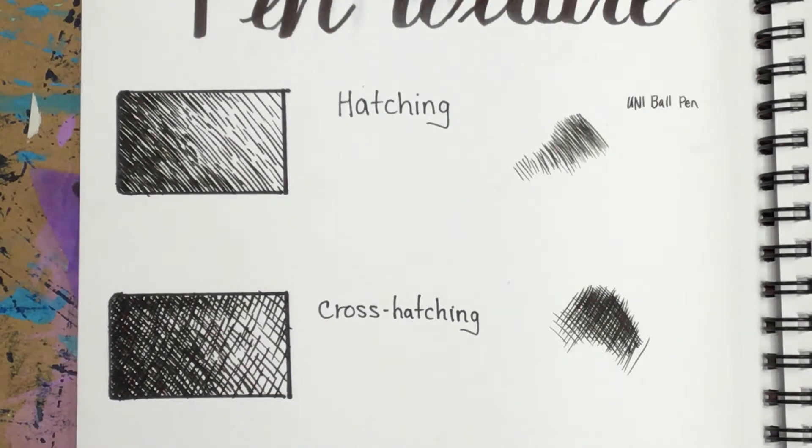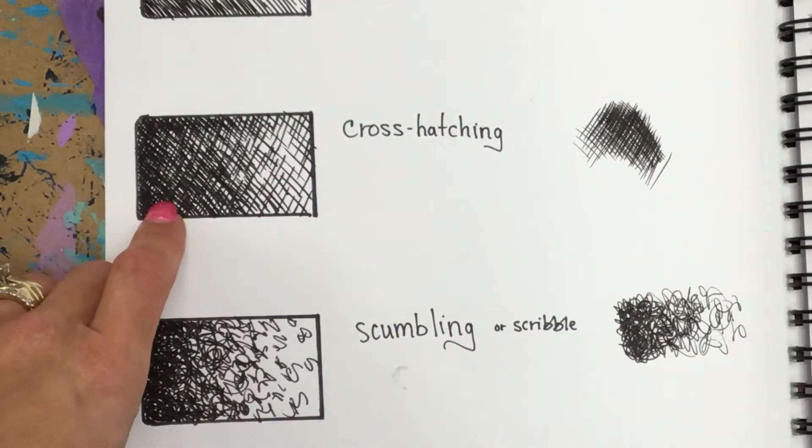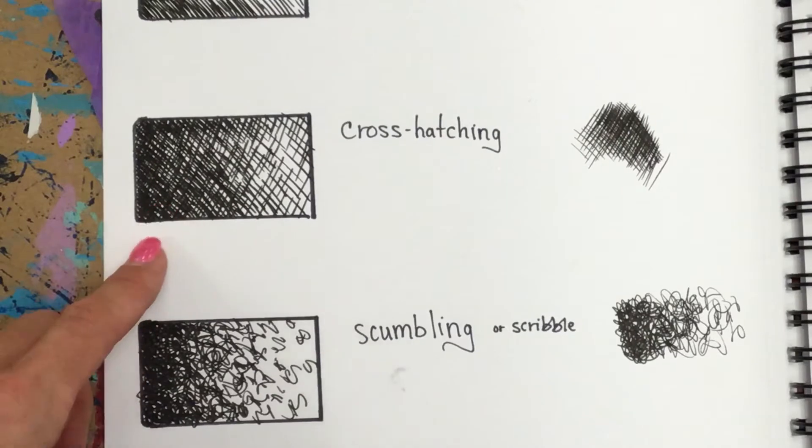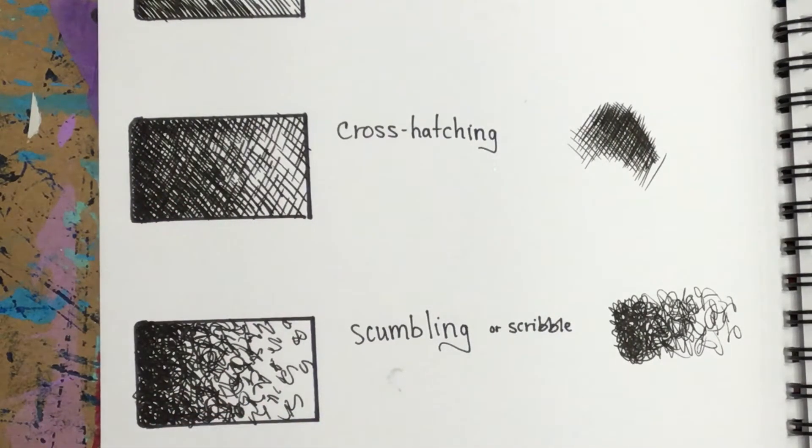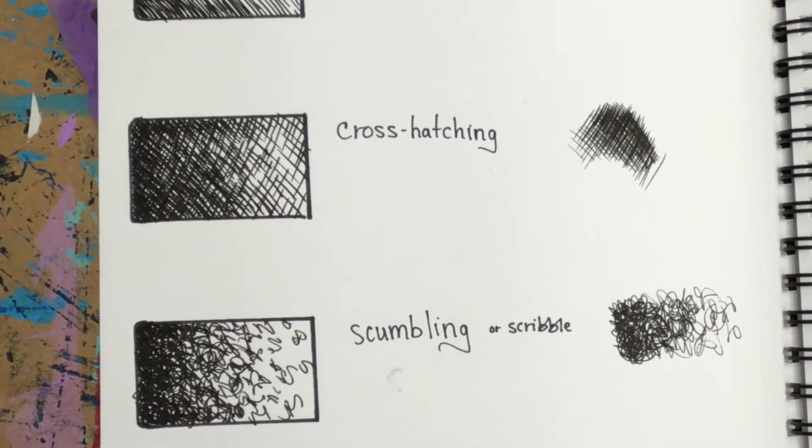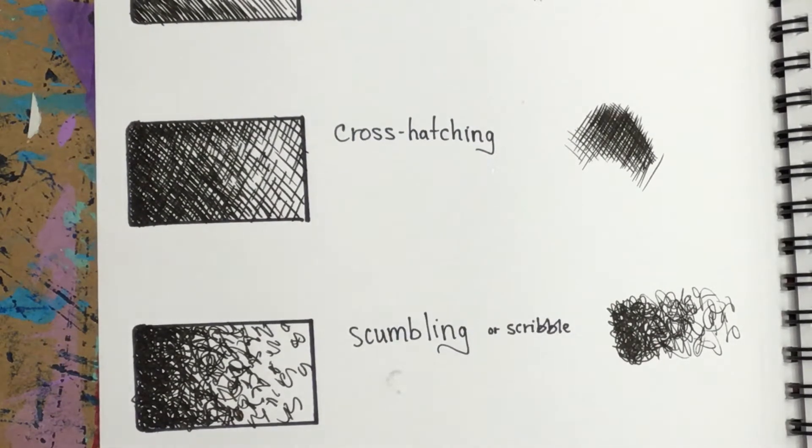Cross-hatching is going to be similar to the hatching, only you're adding lines in the opposite direction. I find for most people that's kind of what they gravitate towards if they haven't really studied any pen ink. This is one that I use a lot too.